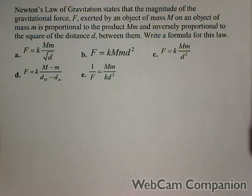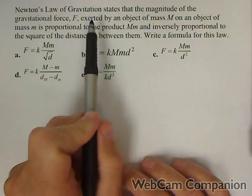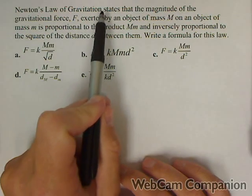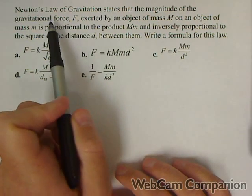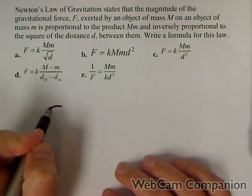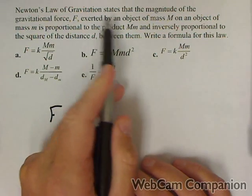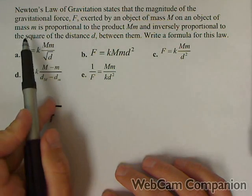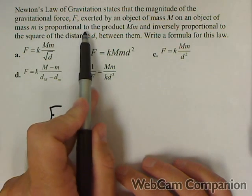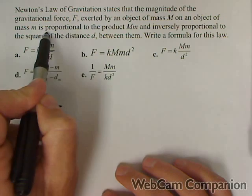In this video, we're going to be dealing with Newton's Law of Gravitation and Proportionality. It states that the magnitude of the gravitational force F exerted by an object of mass M on an object of mass m is proportional to the product of M times m.